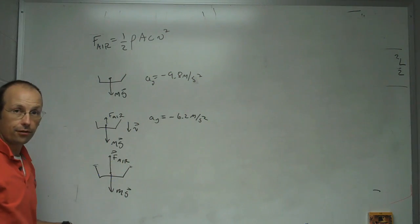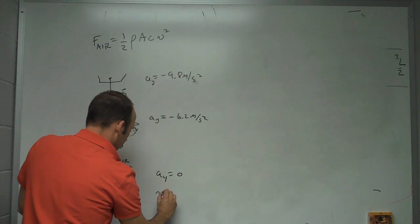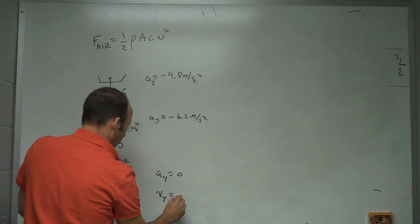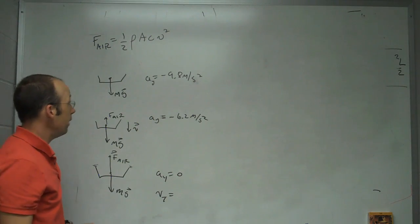These two forces are the same. The air resistance is equal to the gravitational force, and in which case the acceleration is zero. And we call this velocity terminal velocity, v_t.